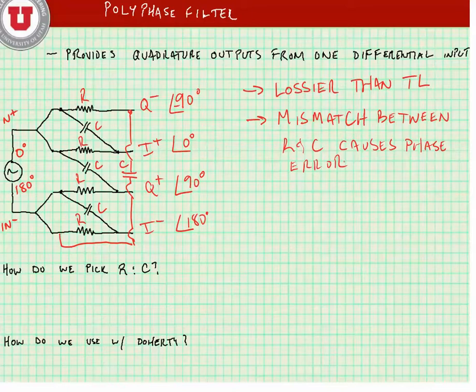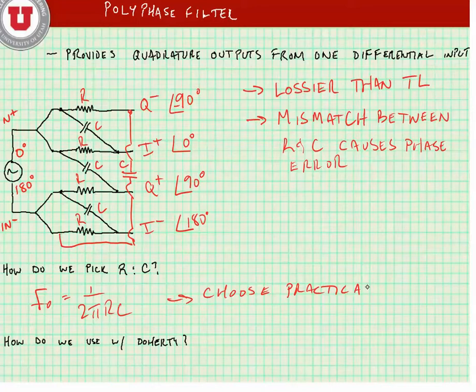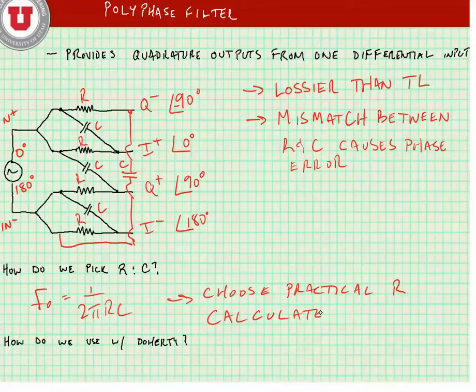So how do we pick the R and C values for our polyphase filter? It's basically just a pole frequency. We have a center frequency that we're trying to design for, it's equal to 1 over 2 pi times RC. We choose a practical R, and then calculate C for our operation frequency.